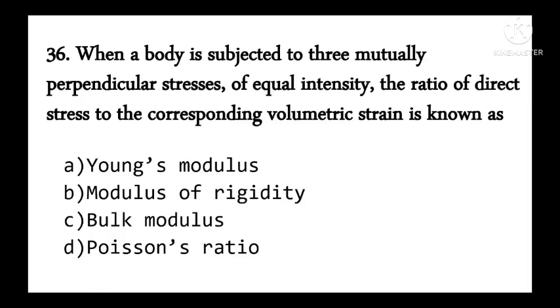When a body is subjected to three mutually perpendicular stresses of equal intensity, the ratio of direct stress to the corresponding volumetric strain is known as bulk modulus — that is direct stress divided by volumetric strain.